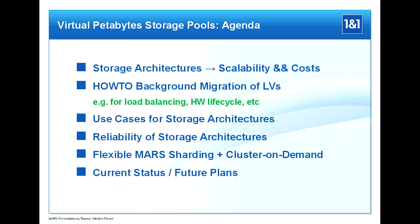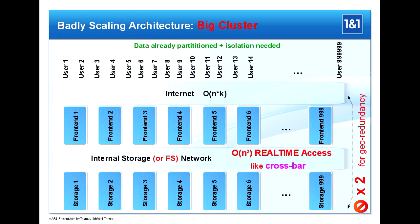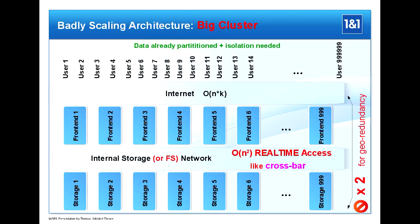First, looking at the big cluster architecture: you have different nodes for compute — the front ends — and storage servers as back ends. In our case at 1&1 we have about nine million home directories. Each user has a different home directory, which means already partitioned data, because these have to be isolated from each other. Each front end could potentially serve any of these home directories via a load balancer.